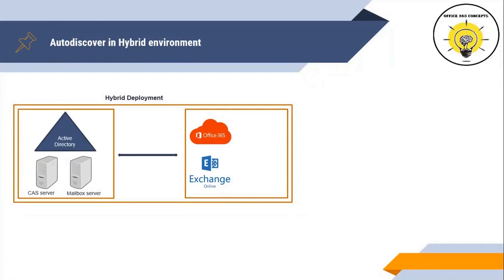Now let's understand how the Autodiscover process works in a hybrid environment, where some mailboxes are on-premise and some are in Office 365. Even when Autodiscover is pointing to your on-premise Exchange server, it continues to work for mailboxes migrated to Exchange Online — one of the advantages of a hybrid scenario. When a user is migrated to Office 365, a remote mailbox is created on-premise and a remote routing address and target address are added to the user's attributes in Active Directory and Exchange mailbox properties.